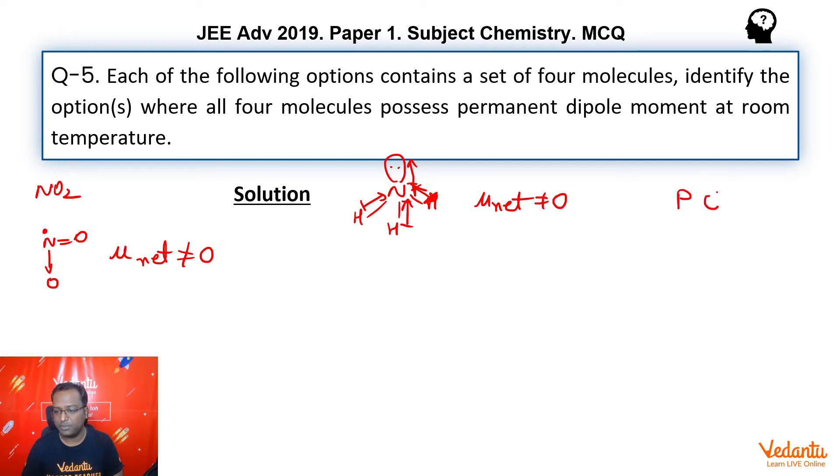Next, if I remember, it was POCl3. So, POCl3, you will have P double bond O, Cl, Cl and Cl. Again, as you can see, dipole moment vectors will not get cancelled.